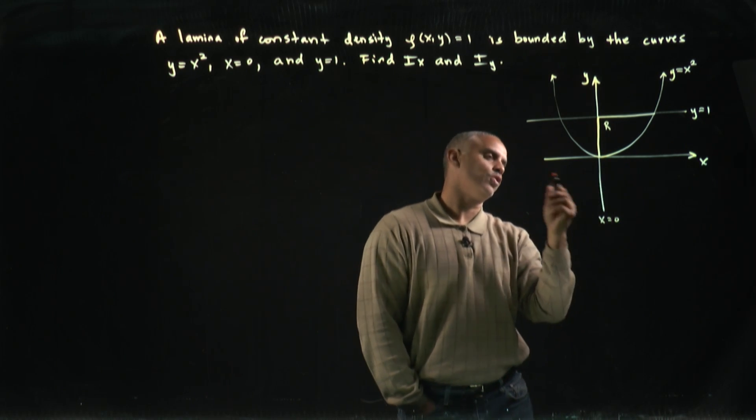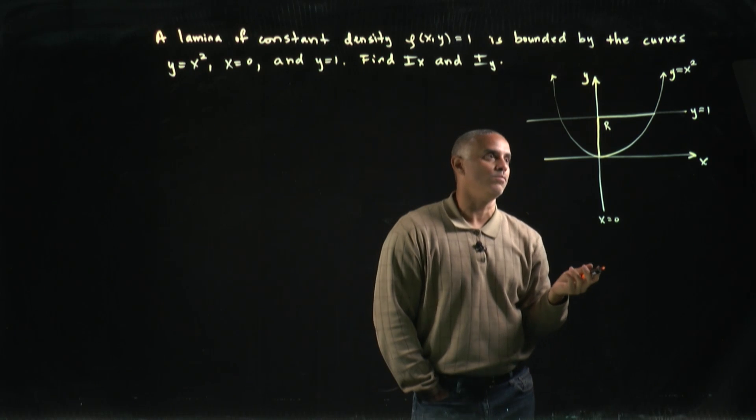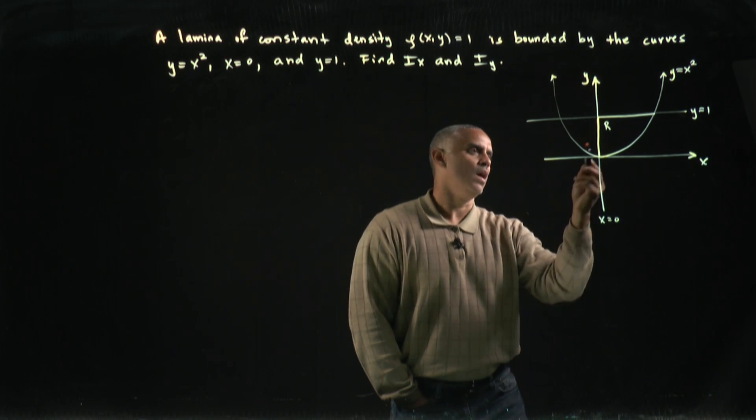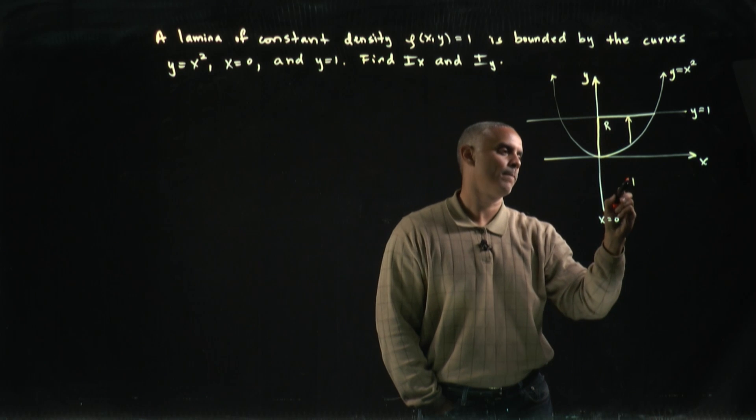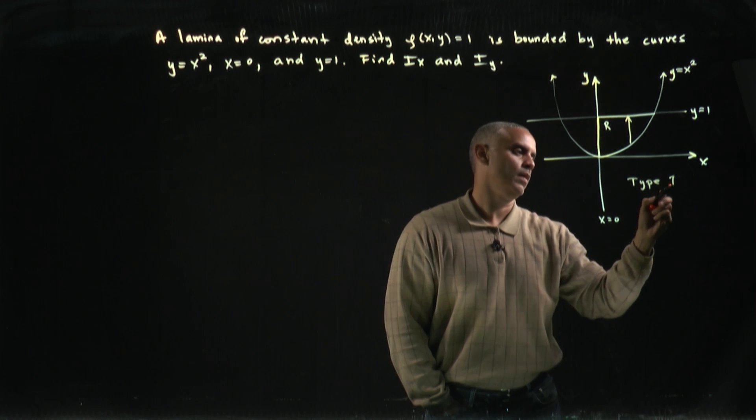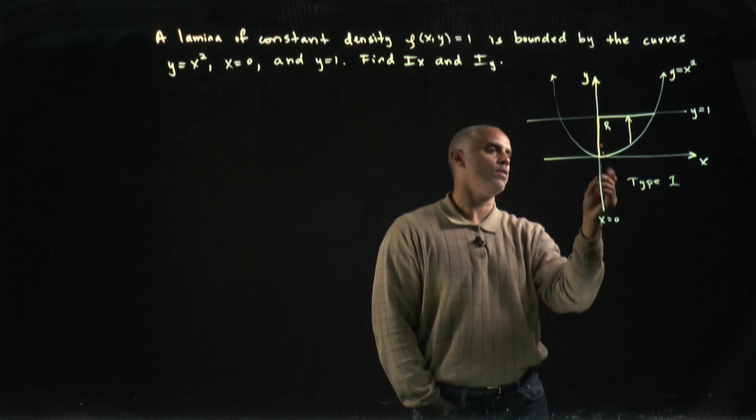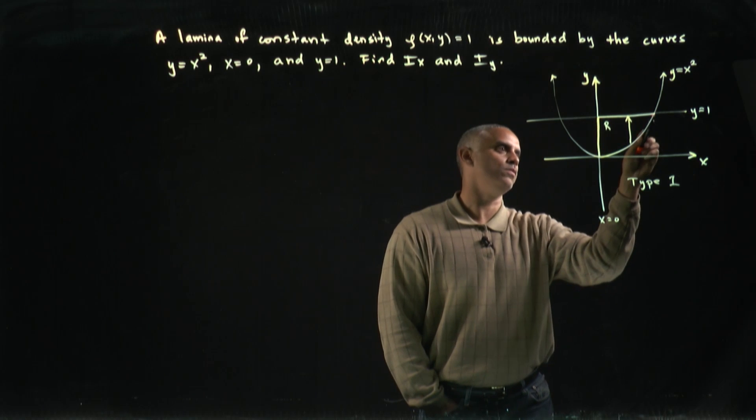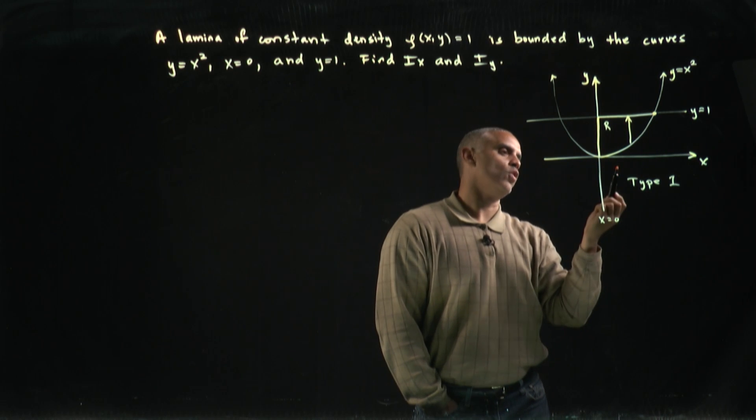We put the x equals 0 axis. If I want, I could treat this as both a type 1 and a type 2 region. Let's treat it as a type 1 and see if we can spell out the region R. I want to sweep an arrow from here to this corner. But how do I know where this corner is?